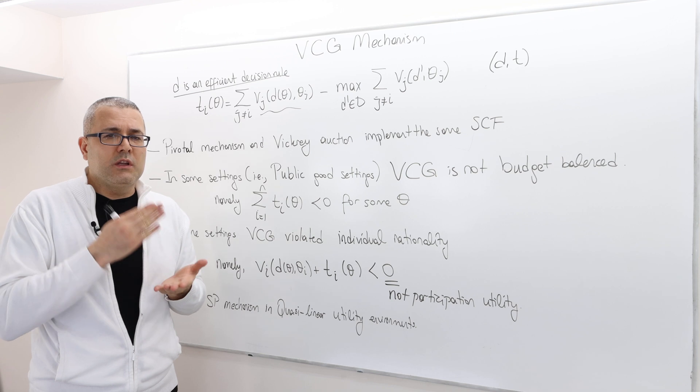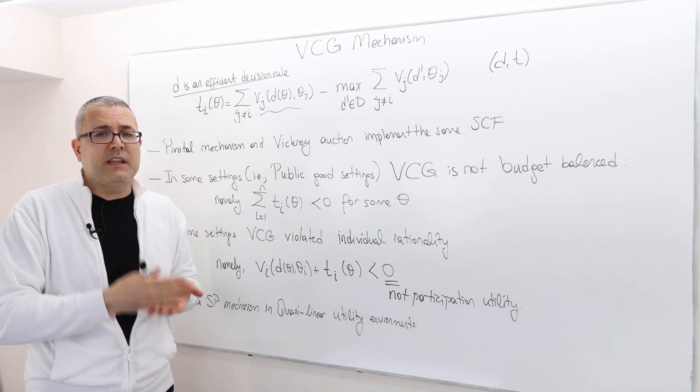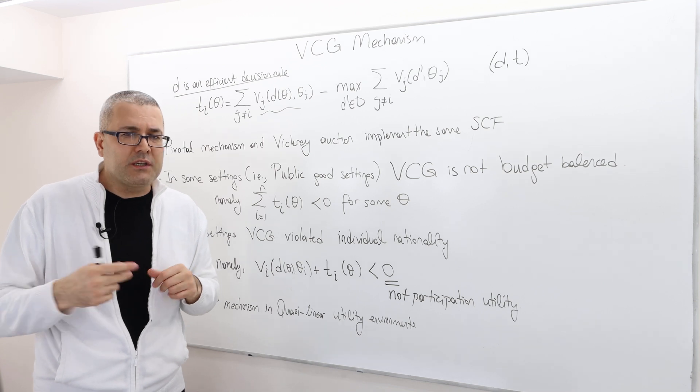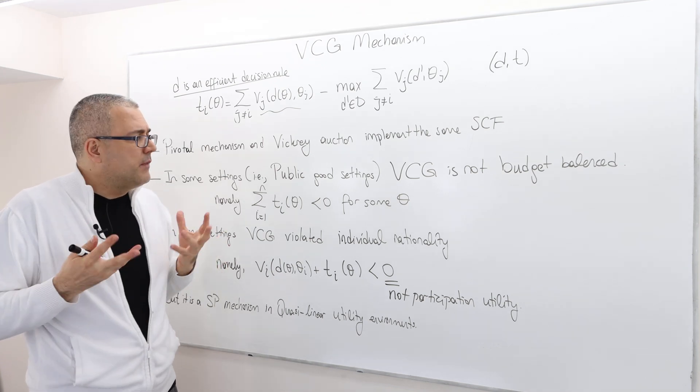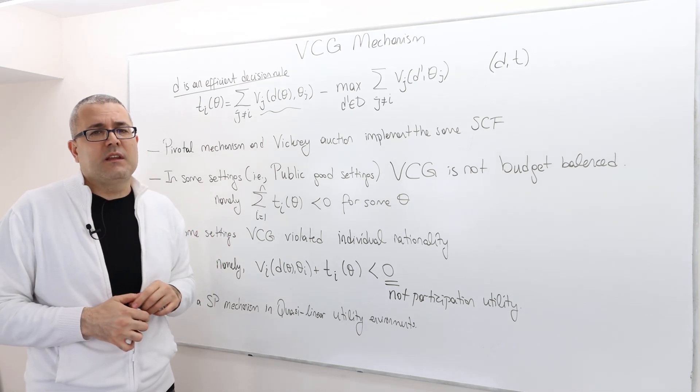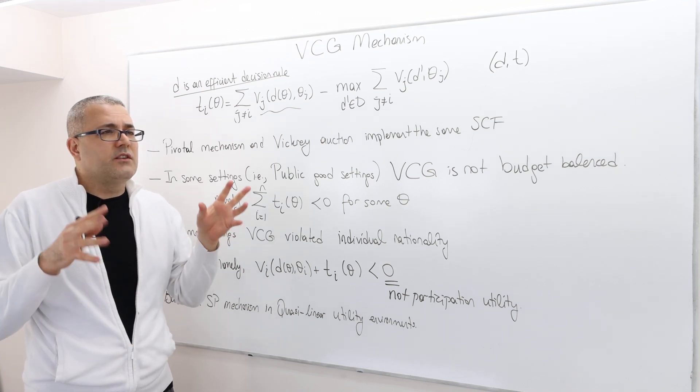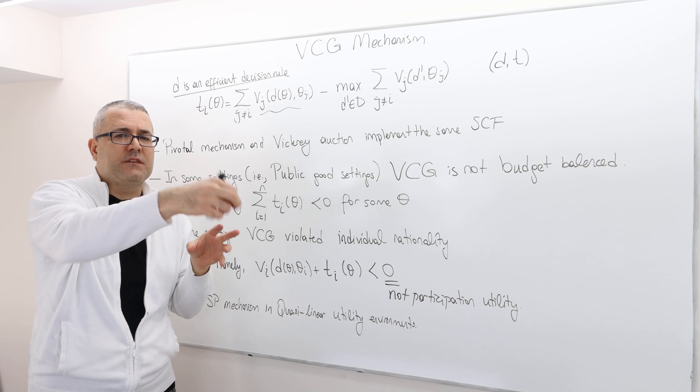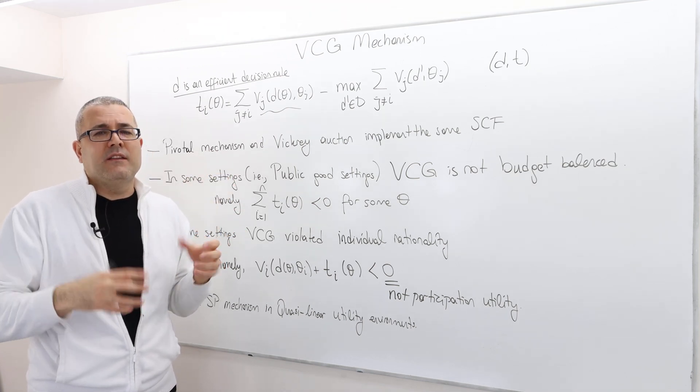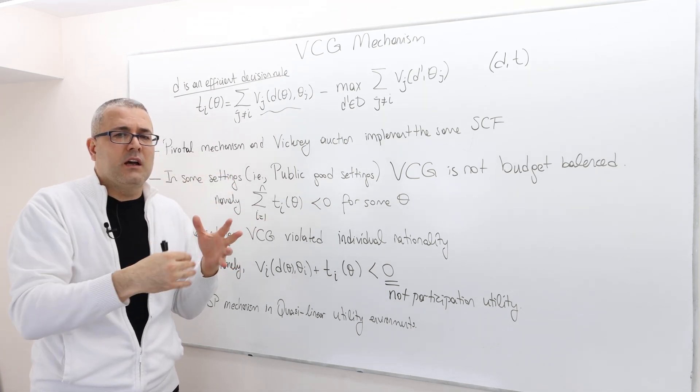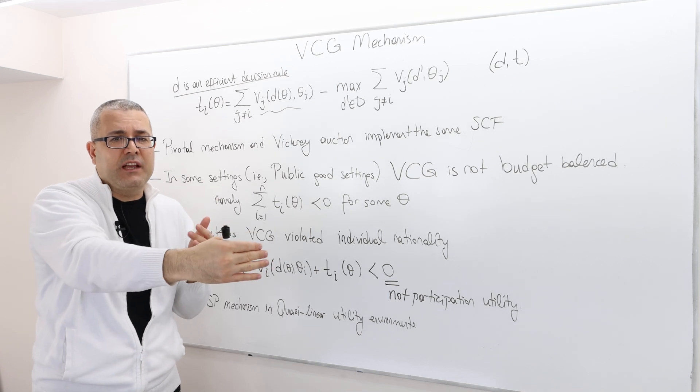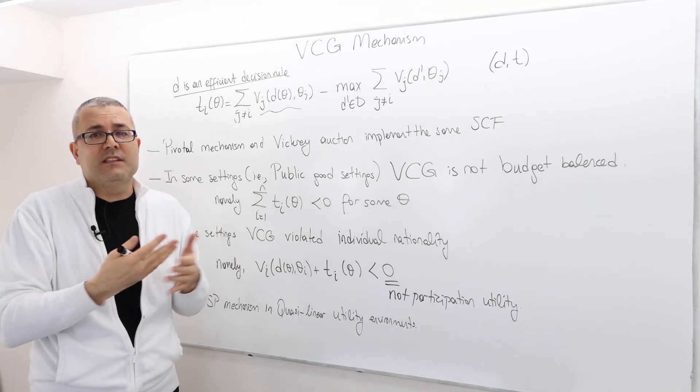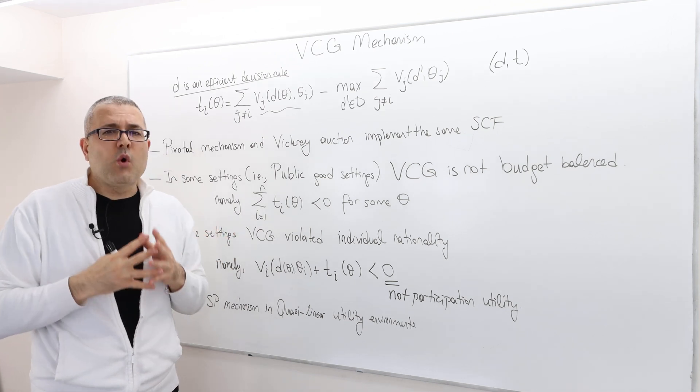Because the winners will is supposed to make a payment and those payments goes to the mechanism designer or the auctioneer. However in some environments as in the public goods settings the transfers are between the agents. So one agent makes a transfer to another agent and so one agent's sort of a negative transfer is another agent's positive transfer. At least this is what we expect.